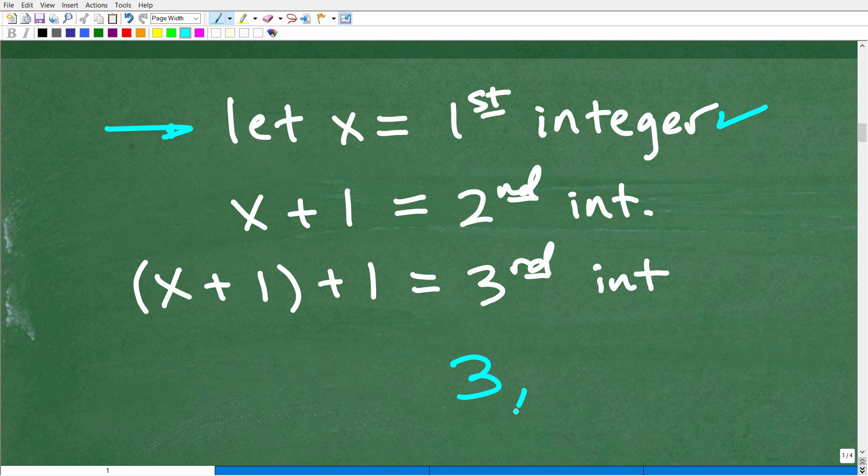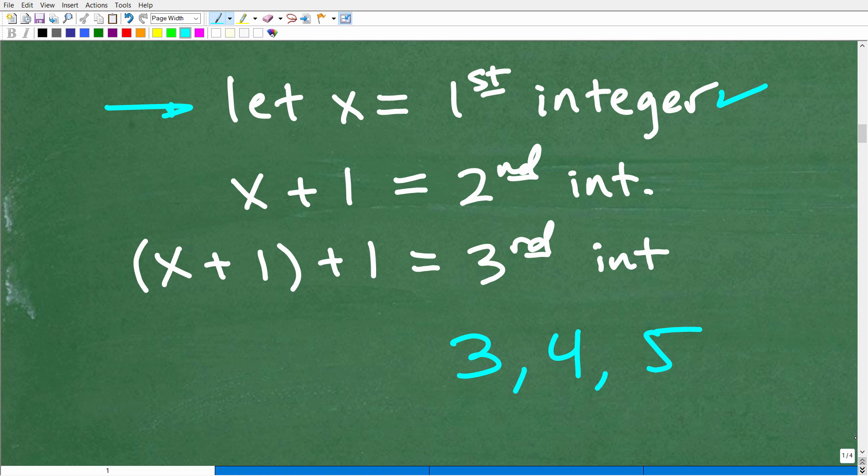Now, remember, things like 3, 4, and 5, this is three consecutive integers. So if three is our first integer, well, to get to the second integer, it's going to be three plus one. So these integers, consecutive integers, are separated by one, right? So the next integer here would be four plus one or three plus one plus one.